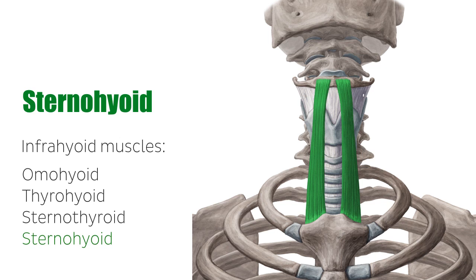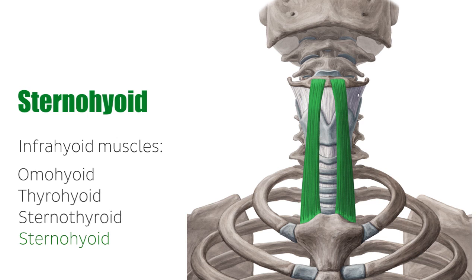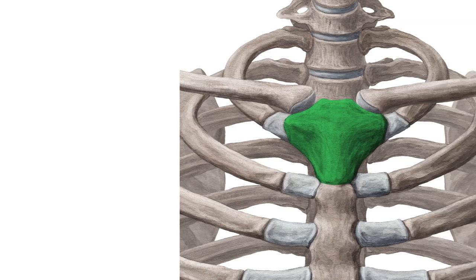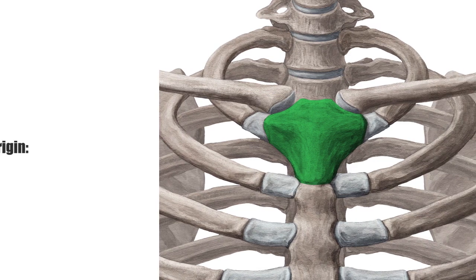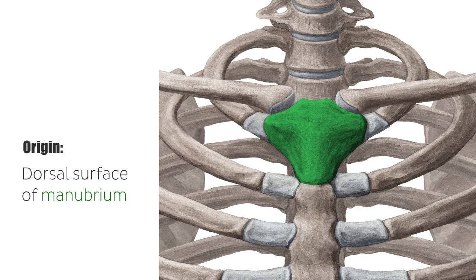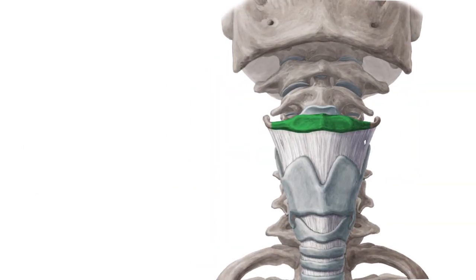The sternohyoid muscle is the focus of this short video, and is seen here highlighted in green on this image of the anterior view of the neck. The sternohyoid muscle has its origin at the dorsal surface of the manubrium and the sternoclavicular joint, and its insertion on the body of the hyoid. The sternohyoid is the most superficial of all the infrahyoid muscles.